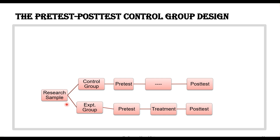Here we have a figurative representation of this design. We take people randomly from the research sample and form two groups — the control group and the experimental group — both with random assignment. One group is termed the control group and the second the experimental group, so the two groups are equal. We go for pre-test in the control group, no treatment, then post-test. For the experimental group, we have the pre-test, the treatment, and then the post-test.